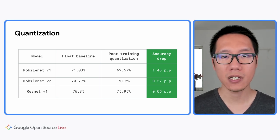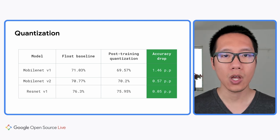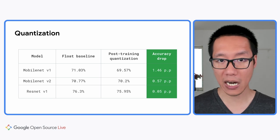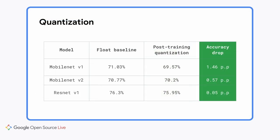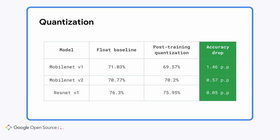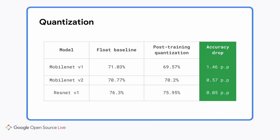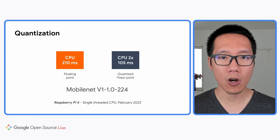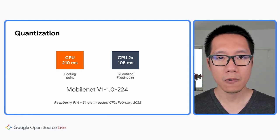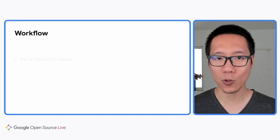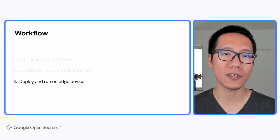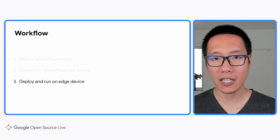Quantization means reducing the number of bytes used to represent the model weights — for example, from 32-bit to 8-bit. Here's a benchmark of applying quantization on some popular computer vision models: these models become 4 times smaller at a loss of about 1% in accuracy. Quantized models also run faster — for example, on a Raspberry Pi 4, a MobileNet V1 quantized model runs about 2 times faster than its original version. You can add quantization when converting your TensorFlow model to TensorFlow Lite by adding just one line of code. Now you have your converted TensorFlow Lite model, and the final step is to deploy it on your device.